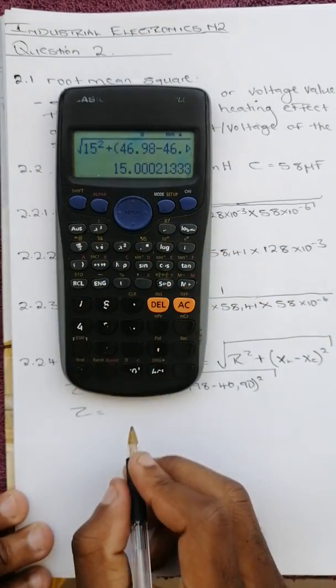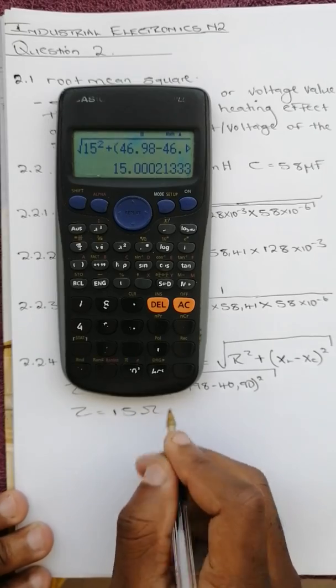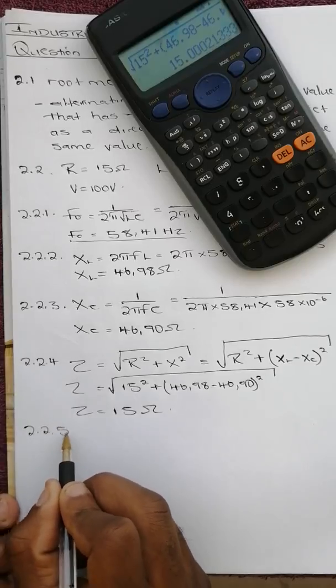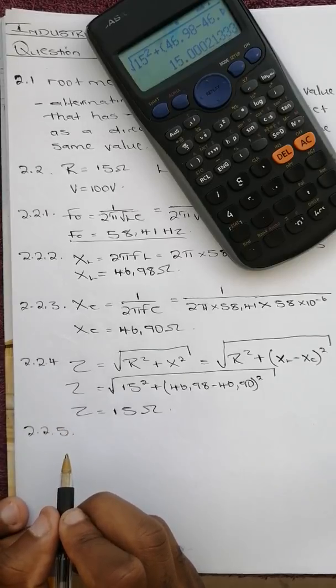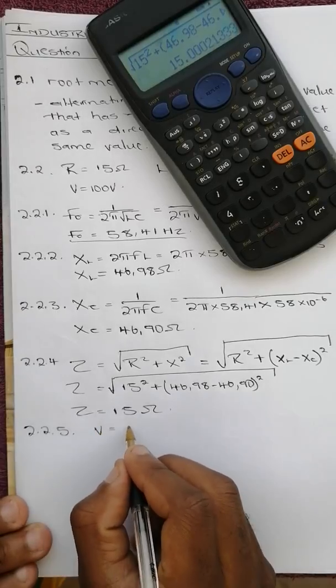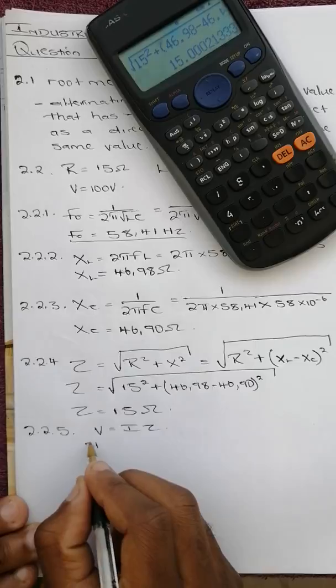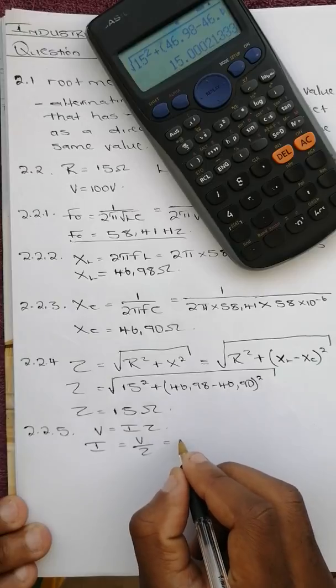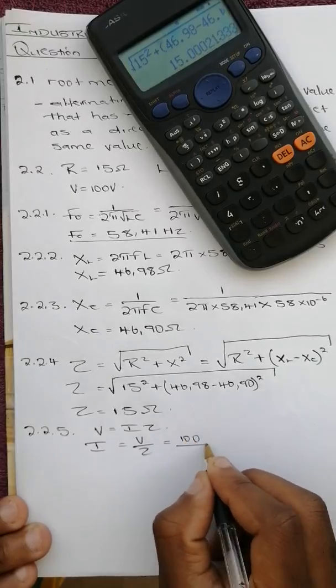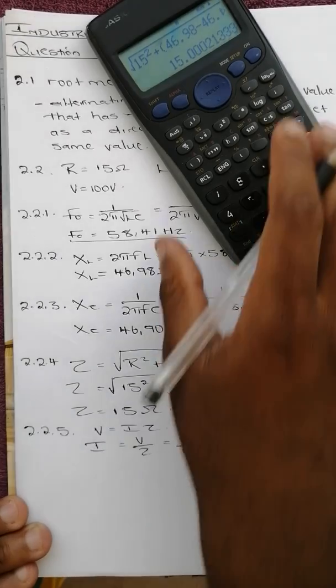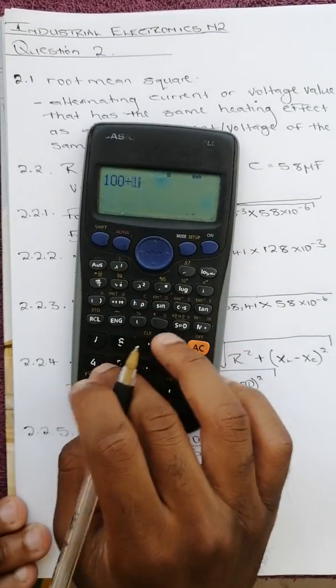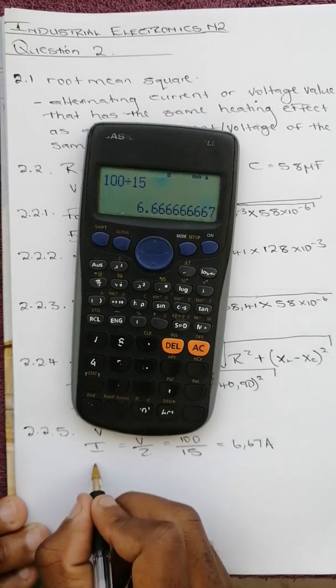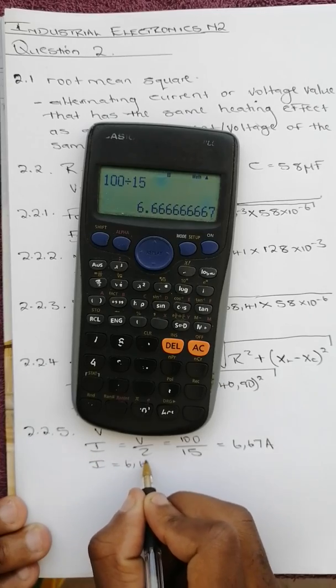And then 2.2.5, this is the total current. V equals IZ, I equals V over the impedance of the circuit, so it's going to be 100 volts over 15 which is 6.67 amps.